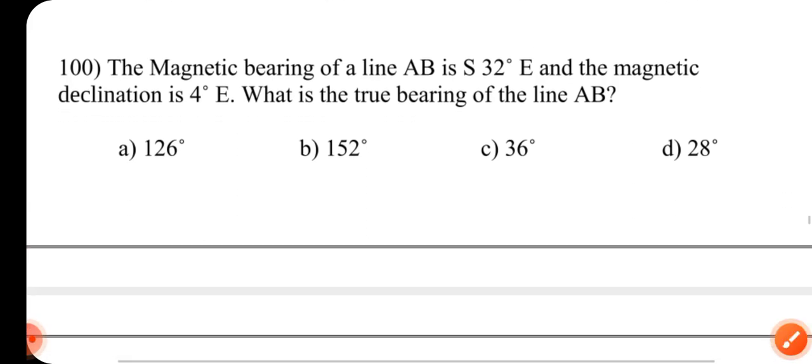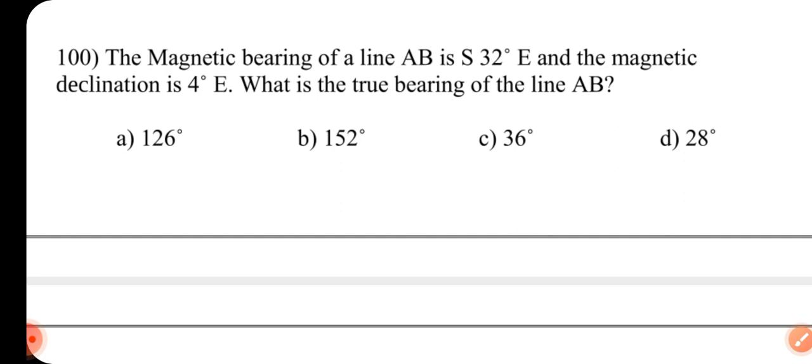Question number 100. The magnetic bearing of a line AB is S 32 degrees east and the magnetic declination is 4 degrees east. What is the true bearing of a line AB? Answer is B 152 degree.